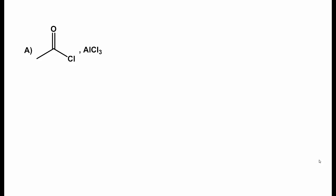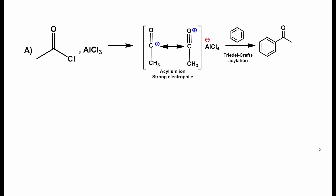Reagent A is a mixture of acetyl chloride with aluminum chloride. Aluminum chloride is a strong Lewis acid and complexes with the acid chloride to form an acylium ion. The acylium ion is an excellent electrophile for electrophilic aromatic substitution reactions and will react with benzene to form a ketone.